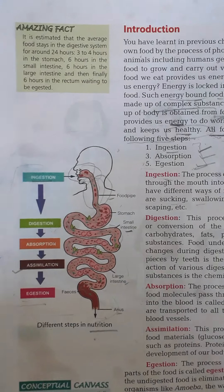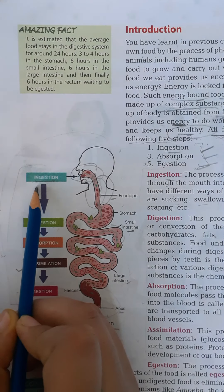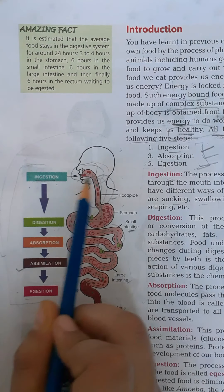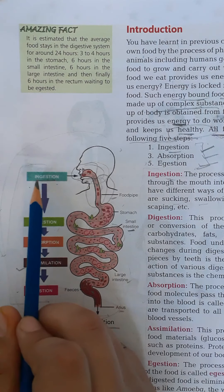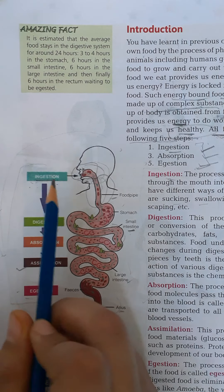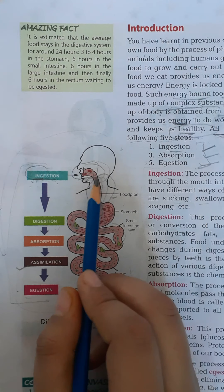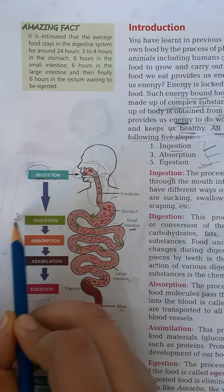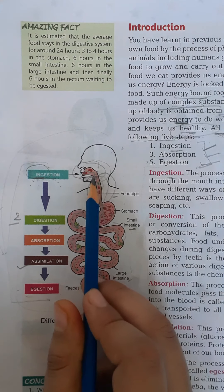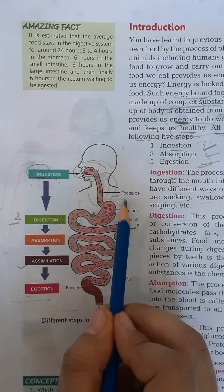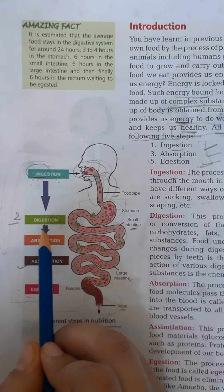So what does ingestion mean? When we put food in our mouth, that process is known as ingestion. Next, when the food goes through the food pipe to the stomach, that is where the next step begins. The food is transferred to and reaches the stomach. Then it is digestion.